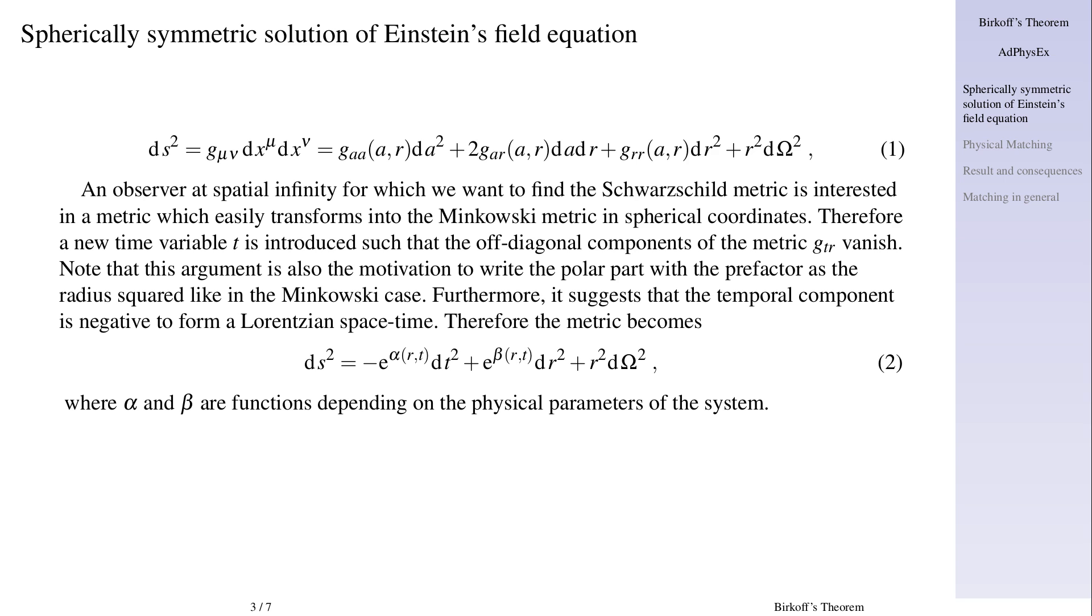An observer at spatial infinity for which we want to find the Schwarzschild metric is interested in a metric which easily transforms into the Minkowski metric in spherical coordinates. Therefore a new time variable t is introduced such that the off-diagonal components of the metric g t r vanish. Note that this argument is also the motivation to write the polar part with the prefactor as the radius squared like in the Minkowski case.